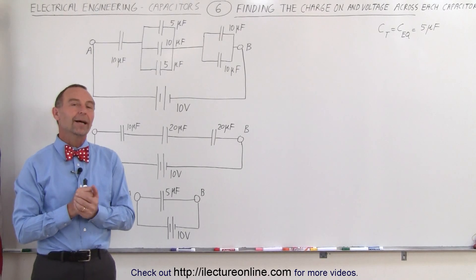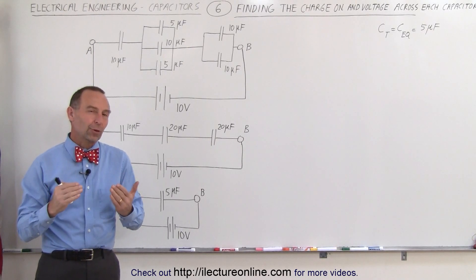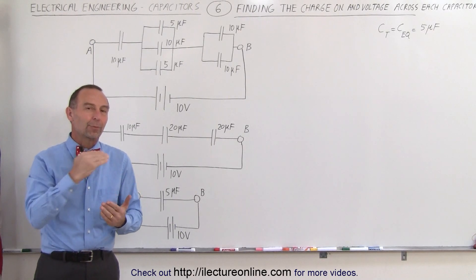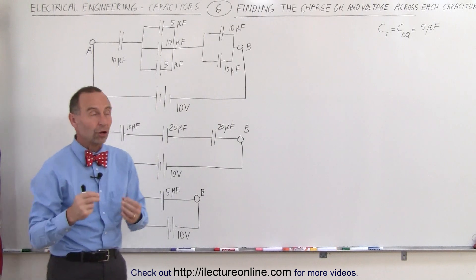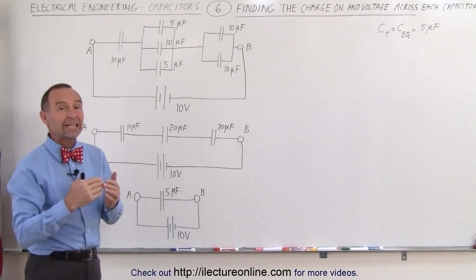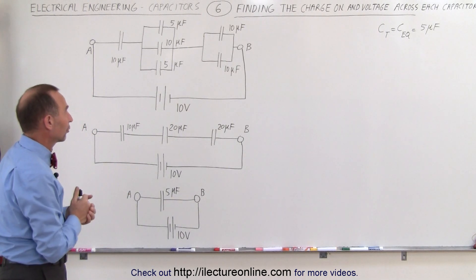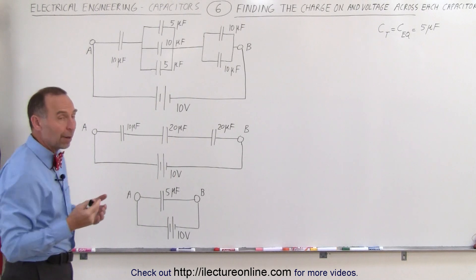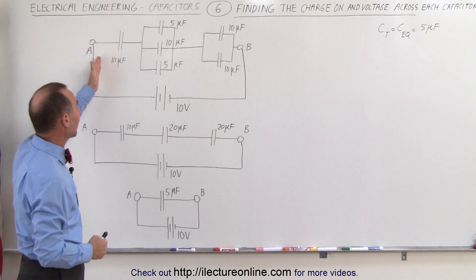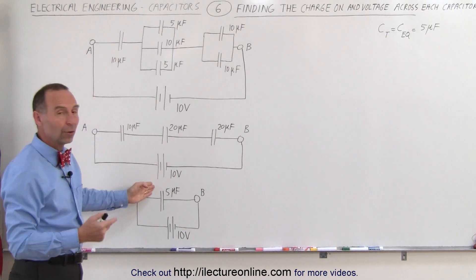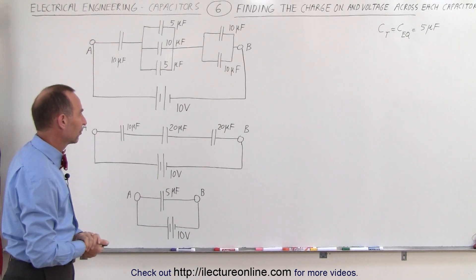Welcome to ElectronLine. We're going to take the same circuit we had in the previous video and find the charges and voltages across each of the capacitors. Remember, in the previous video we found the equivalent capacitance, which happened to be 5 microfarads.